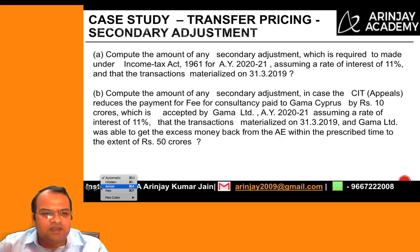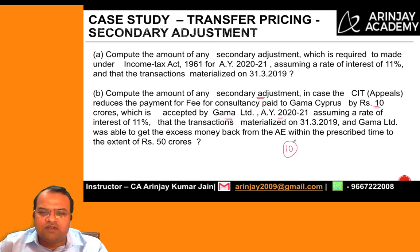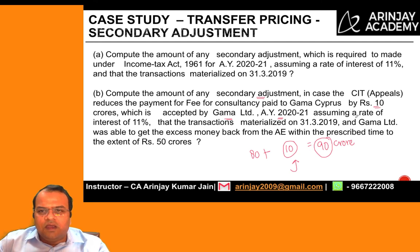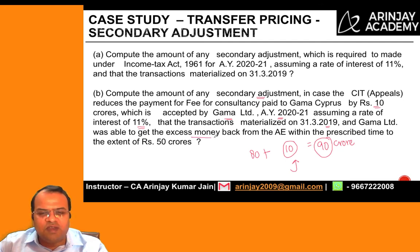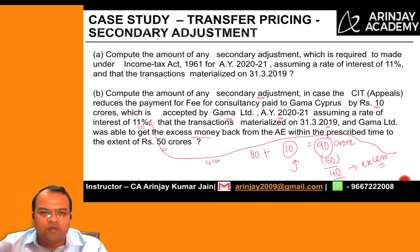Part B: The CITFP further reduces the fee for consultancy services by 10 crores, and this is accepted by Gamma Limited. Earlier adjustment was 80 crores; adding 10 crores gives a total adjustment of 90 crores. Gamma Limited was able to recover 50 crores from the AE within the prescribed period, leaving a balance of 40 crores with the AE. Interest at 11% for one year on 40 crores equals 4.4 crores.